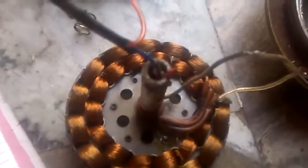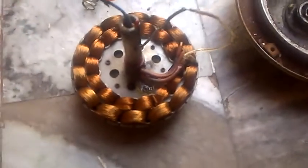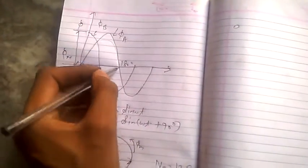And we know that if a current carrying conductor is placed in a magnetic field, then it starts to rotate. But it can't catch the speed of the synchronous speed. Now we will discuss the construction.